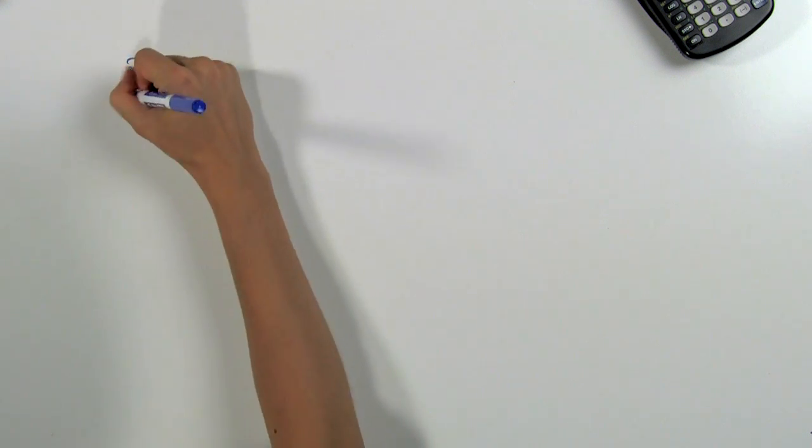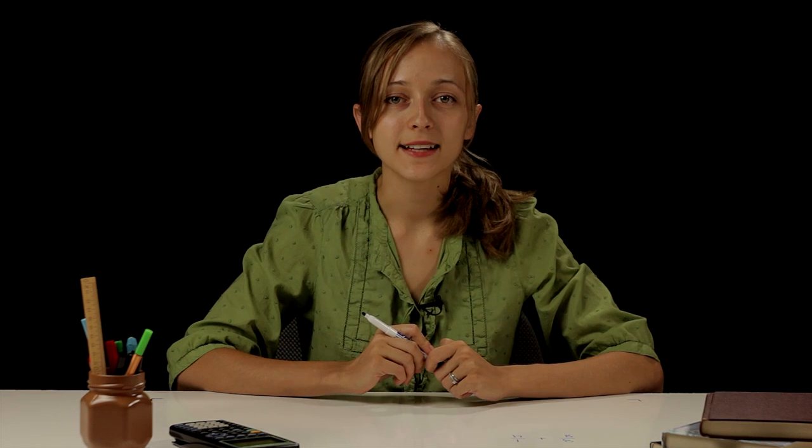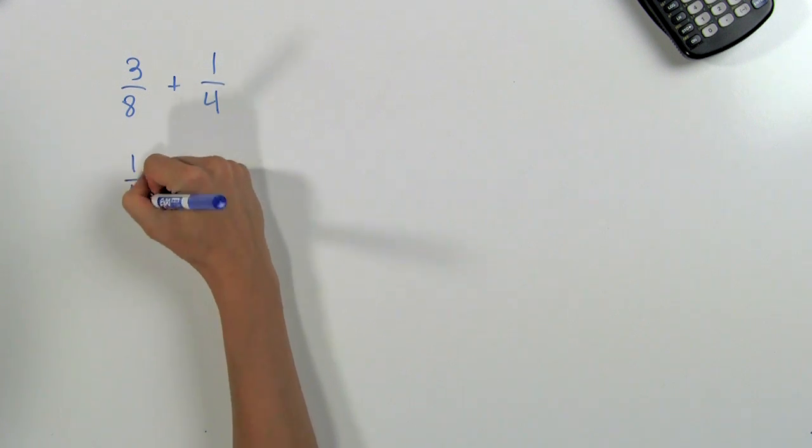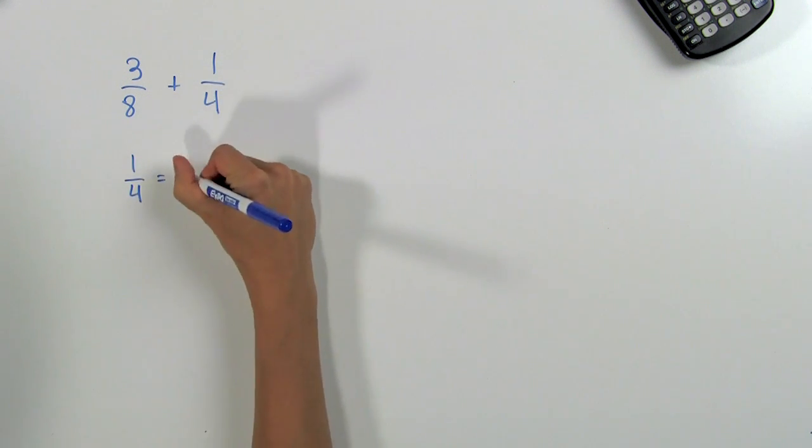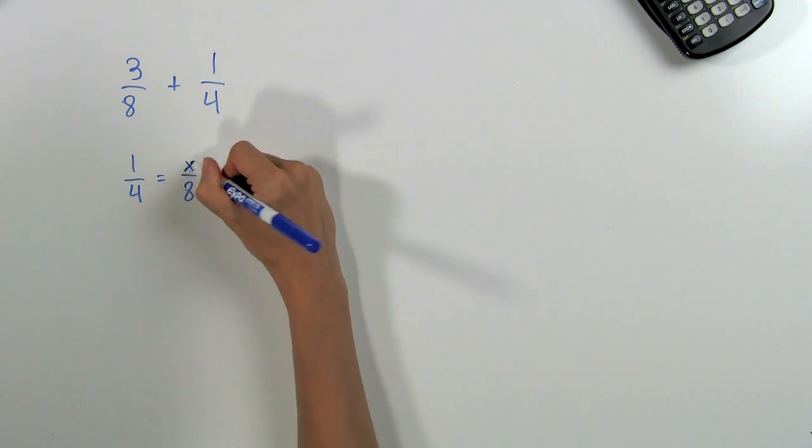Let's add 3 eighths and 1 fourth. To add them, we need to find a common denominator. Let's find a fraction that is equal to 1 fourth that has a denominator of 8. We need to find the right number that goes in the spot, which we can call x for now.